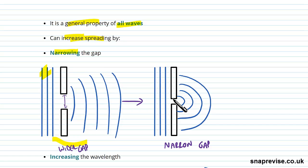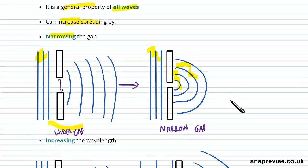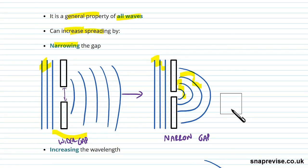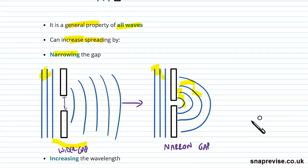Whereas here, with a narrow gap, we see as we had above, incoming wavefronts like this, but then we've got these semi-circles coming out here. So narrowing the gap increases the, will increase the spreading.